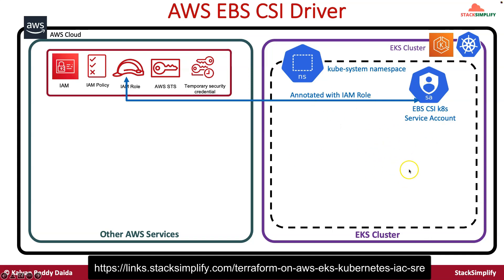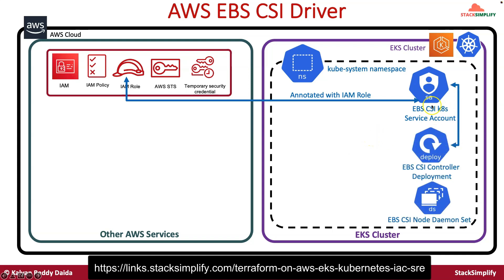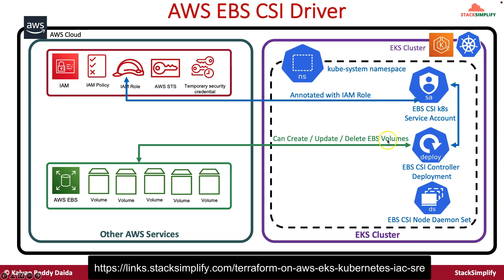From Kubernetes itself, the pods related to CSI controller that use this service account will be able to manage the EBS volumes. After the service account, another deployment happens when we install the CSI driver — the EBS CSI controller, which is a Kubernetes Deployment. It creates pods that can create, update, or delete EBS volumes. This CSI controller is the key component for handling EBS volumes, and those pods will use the EBS CSI Kubernetes service account.